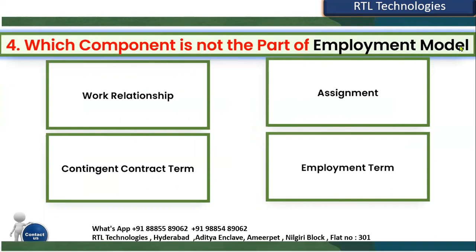The fourth question: which component is not part of the employment model? The employment model is a combination of three components, but four options are given. The options are: Work Relationship, Assignment, Contingent Contractor, or Employment Term. Contingent Contractor is not part of the employment model. The employment model consists of Work Relationship, Assignment, and Employment Terms — combining these three gives you a two-tier or three-tier employment model.